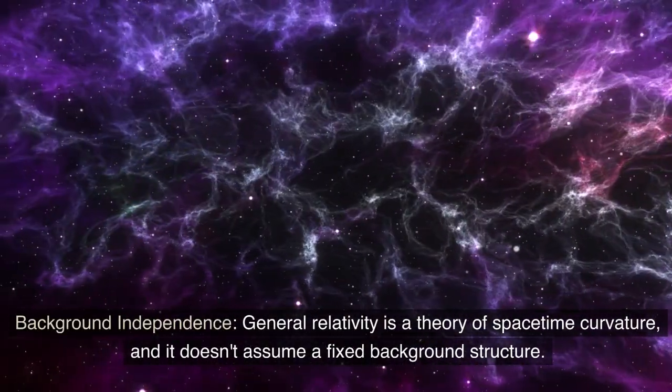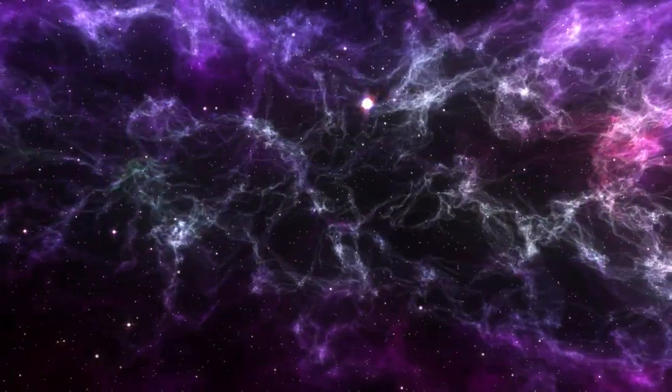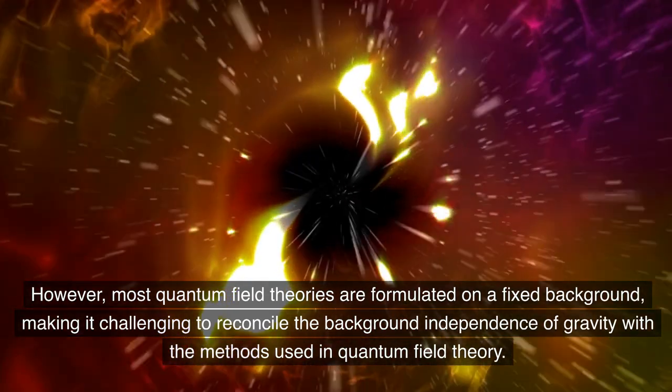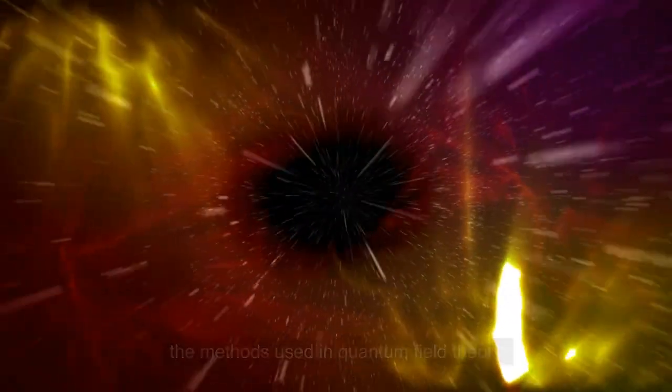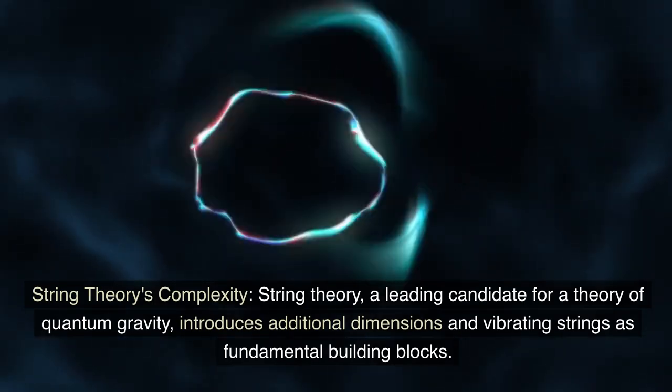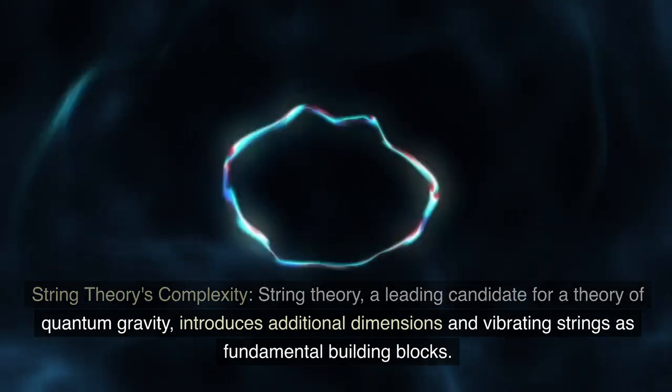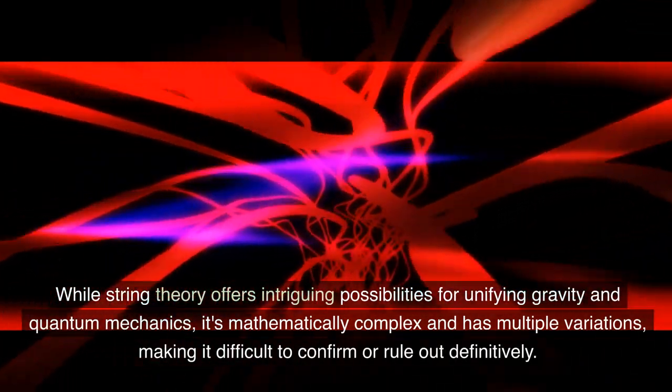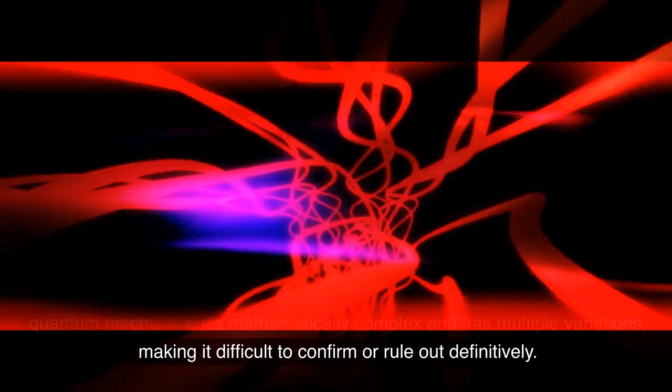Background independence. General relativity is a theory of spacetime curvature, and it doesn't assume a fixed background structure. However, most quantum field theories are formulated on a fixed background, making it challenging to reconcile the background independence of gravity with the methods used in quantum field theory. String theory's complexity. String theory, a leading candidate for a theory of quantum gravity, introduces additional dimensions and vibrating strings as fundamental building blocks. While string theory offers intriguing possibilities for unifying gravity and quantum mechanics, it's mathematically complex and has multiple variations, making it difficult to confirm or rule out definitively.